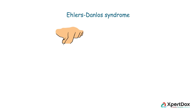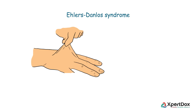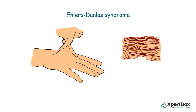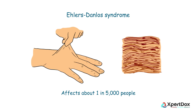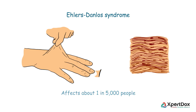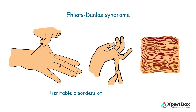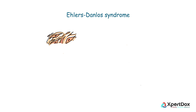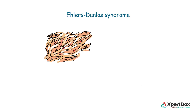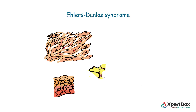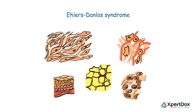Ehlers-Danlos Syndrome, or EDS, is a connective tissue disease that affects about 1 in 5,000 people. It is the most common group of disorders in the family of hereditable disorders of connective tissues. Multiple symptoms are present in EDS since it is a disease of connective tissue which is found in virtually every organ system.